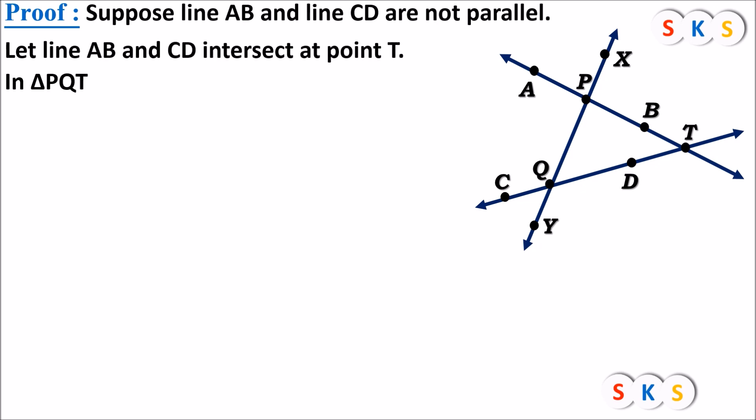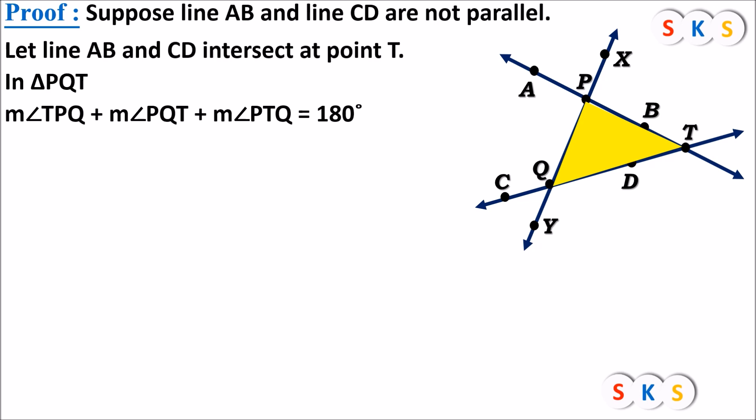When those two lines intersect, they form a triangle with the transversal. So here we have triangle PQT. We know the sum of the measures of all three angles of a triangle is 180°. Therefore, angle TPQ + angle PQT + angle PTQ = 180°, according to the angle sum property of a triangle.